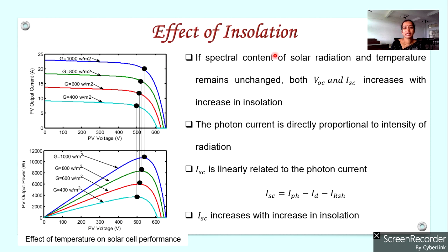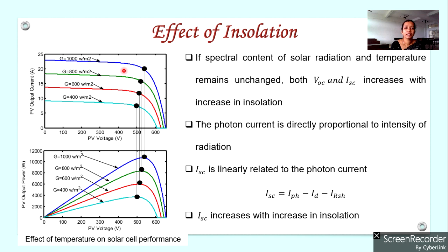First, the effect of insolation. Insolation or irradiation refers to the amount of power contained in the solar radiation. Let us see how this change in insolation or irradiance affects the performance of a solar cell — how the IV and PV characteristics change.